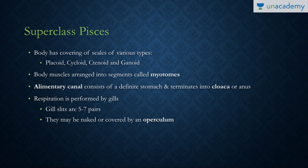Fishes have various types of scales on their body — they can be placoid, cycloid, ctenoid, or ganoid. The body muscles are arranged into segments known as myotomes. The alimentary canal has a stomach and may terminate either into a cloaca or may have a separate anal opening.